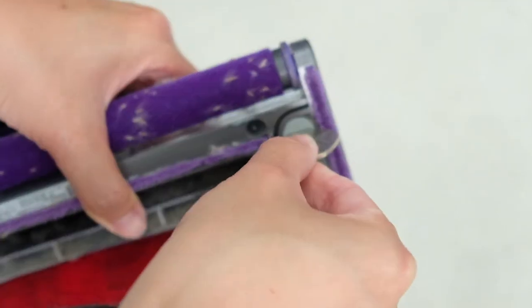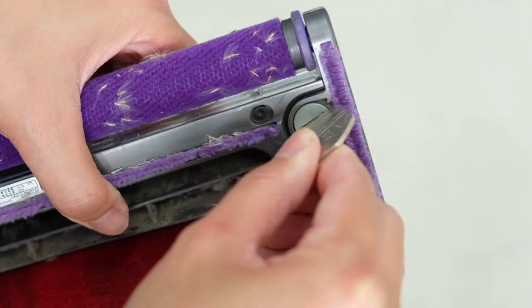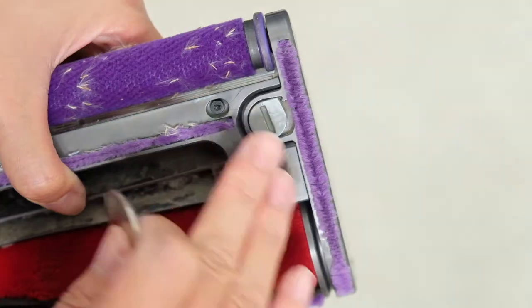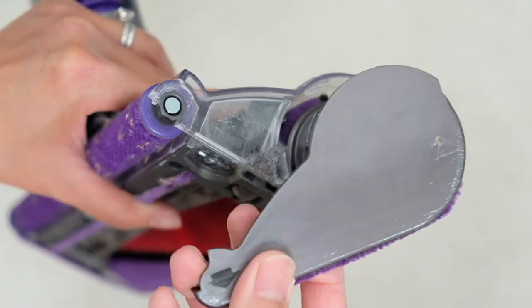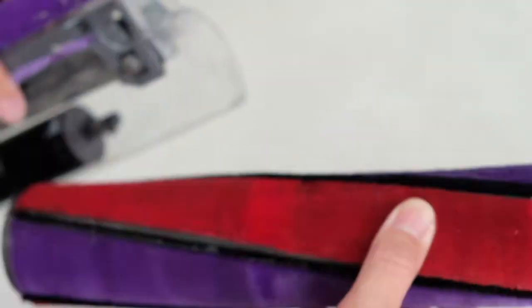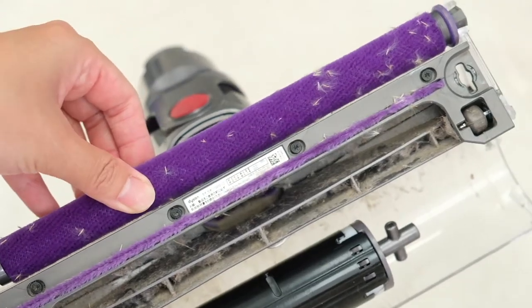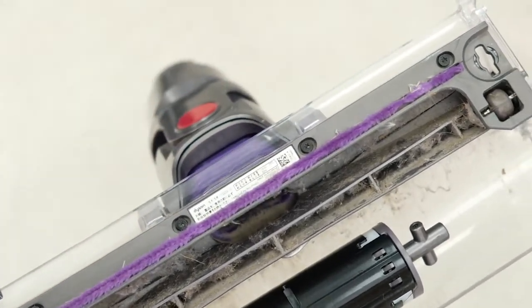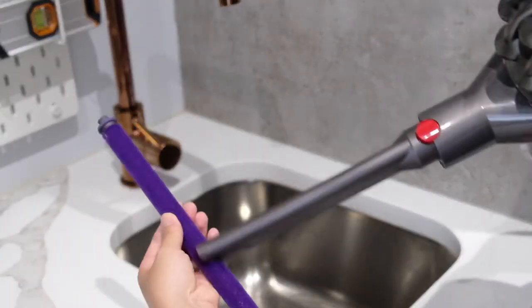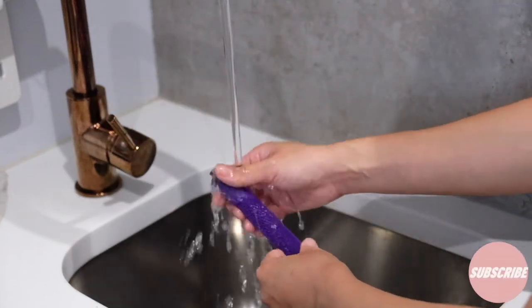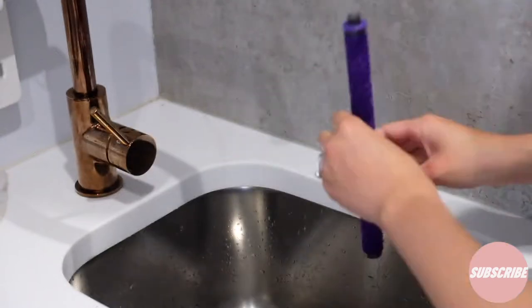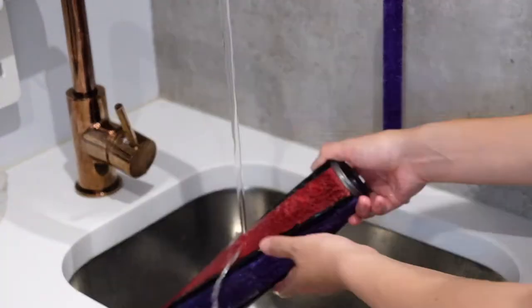Then you'll need this 50p coin to open the soft roller head. Be very gentle if this is the first time you disassemble a Dyson. After you've opened up the side, the rest is very straightforward. For the cleaning, let's start with the easy bits, the two rollers. First, rinse them under cold running water.